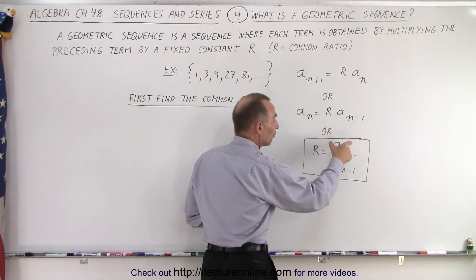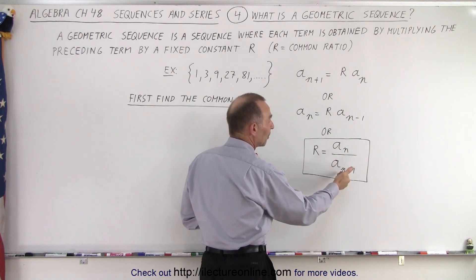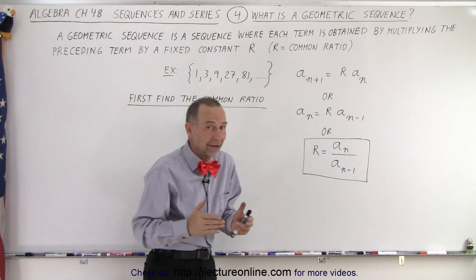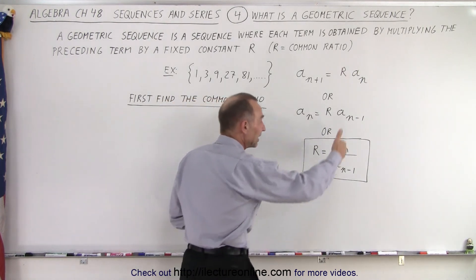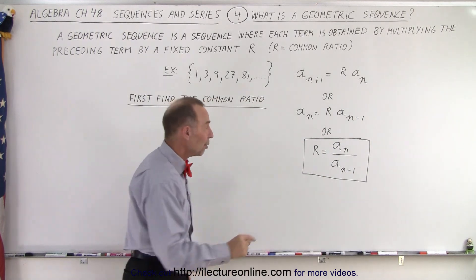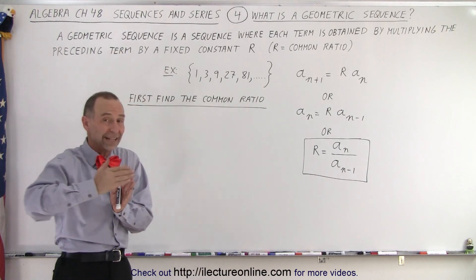of the next term divided by the preceding term. It doesn't matter if you have a sub n over a sub n minus one, or a sub n plus one over a sub n. It doesn't matter, it's just the very next term in the sequence, and when you take that ratio, you have what we call the common ratio, and it's the same no matter which two numbers you pick in the sequence, as long as one is the next one.